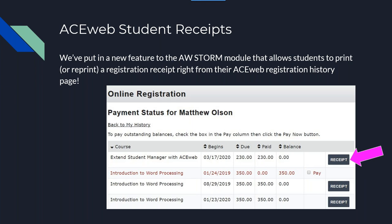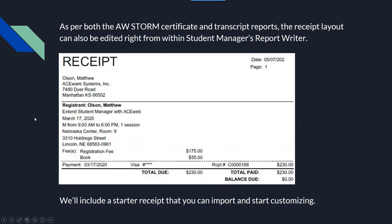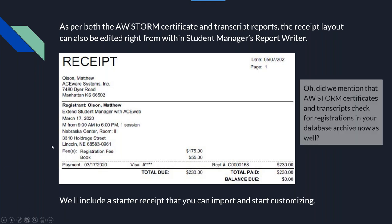We've now added receipts as an option that users can print from their web browser. If they lost their receipt or need a copy, they can get it without having to bother the office. It's on the 'My History' link, and if you go up to your course list you'll now see a receipt option for those courses. You have control over what the receipt looks like — there's a canned report that will be sent, but you can modify it. STORM now also pulls certificates, transcripts, and receipts from the archive if you've archived your data.